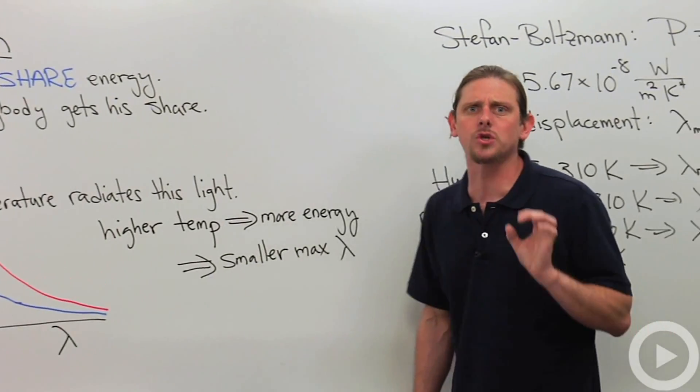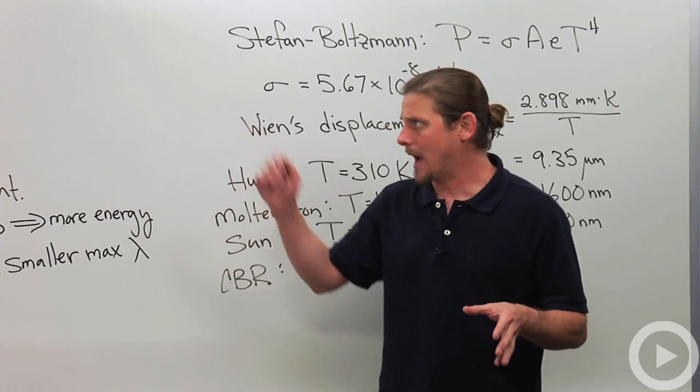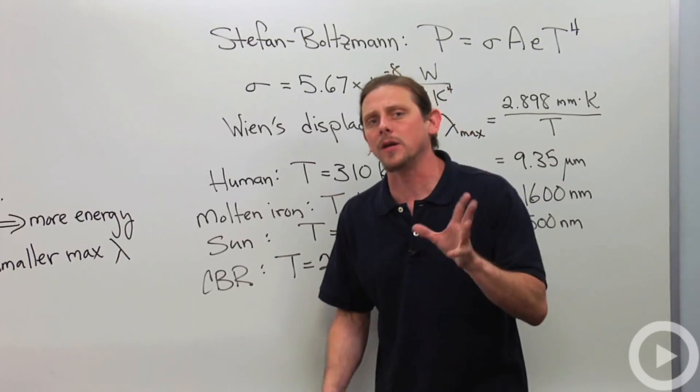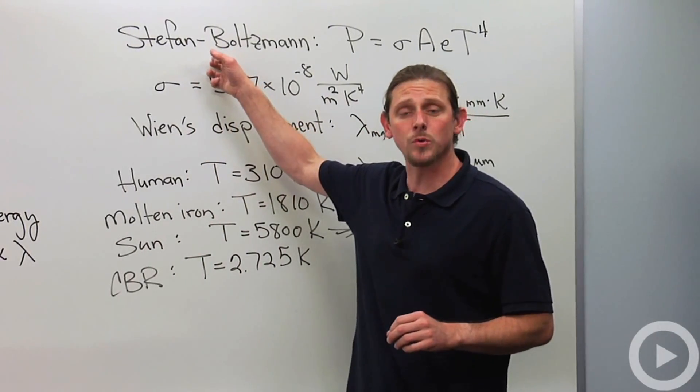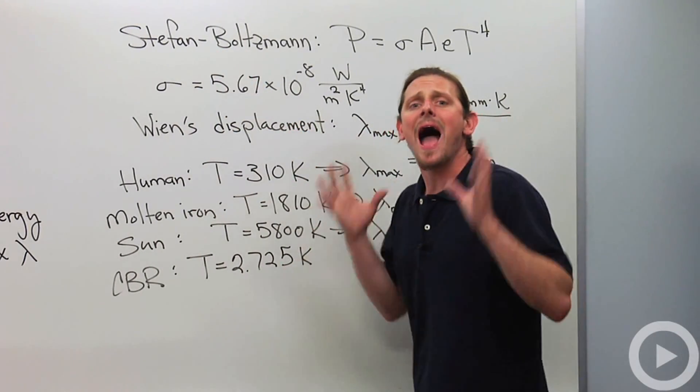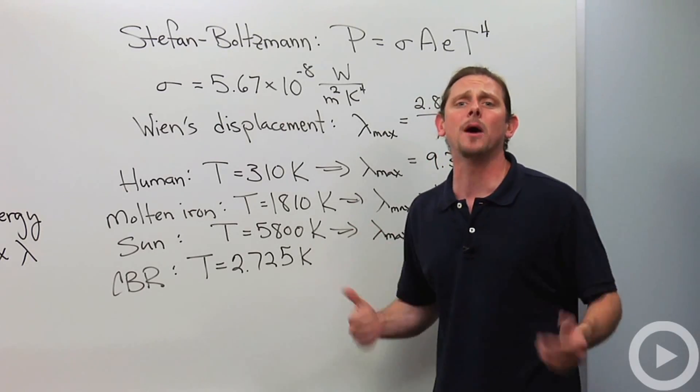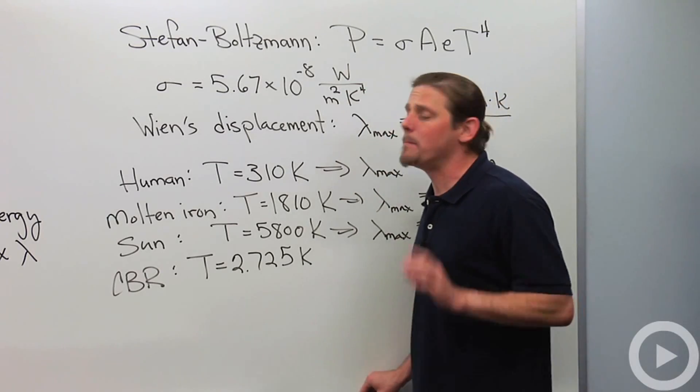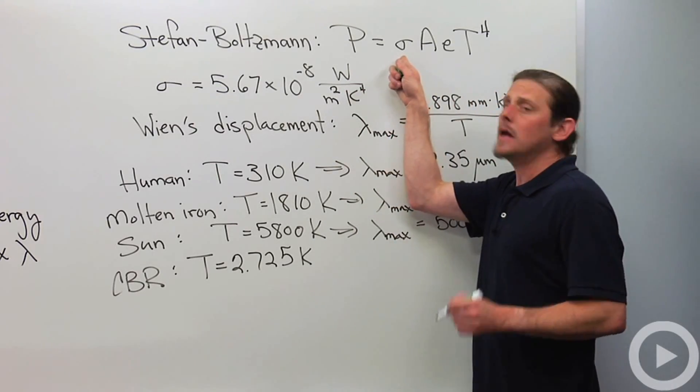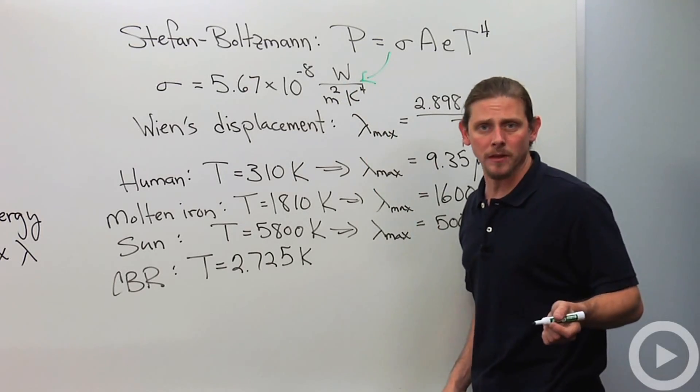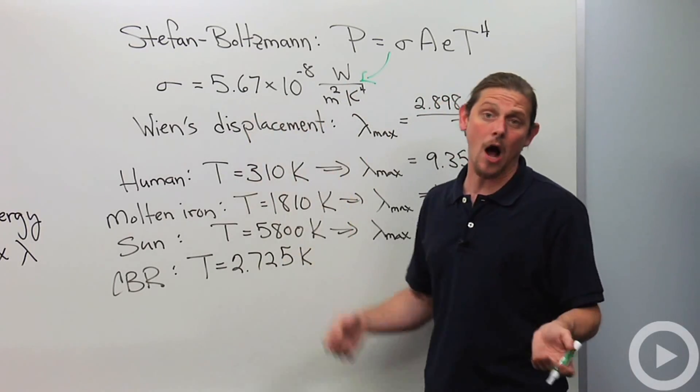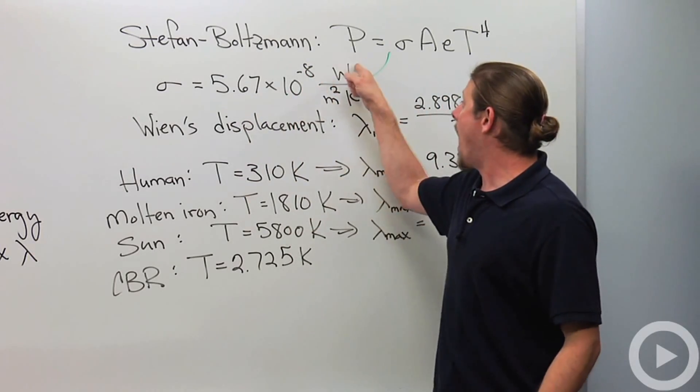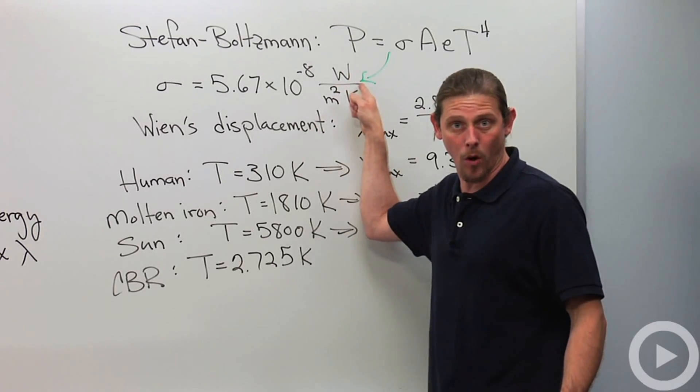There's two major formulas that are associated with the blackbody radiation formula. Now, I'm not going to write up Planck's formula because it's kind of complicated, but these are two things that are derived from it. The first one is the Stefan-Boltzmann law, and that tells you how much energy per unit time or how much power is emitted by something that has temperature T. So, it tells us that power is equal to sigma. Sigma is the Stefan-Boltzmann constant, and you can measure it or you can calculate it from fundamental constants. It's 5.67 times 10 to the minus 8 watts per meter squared Kelvin to the fourth.